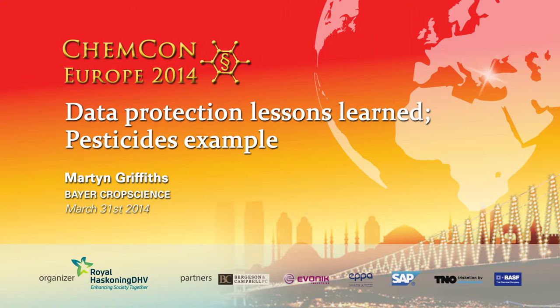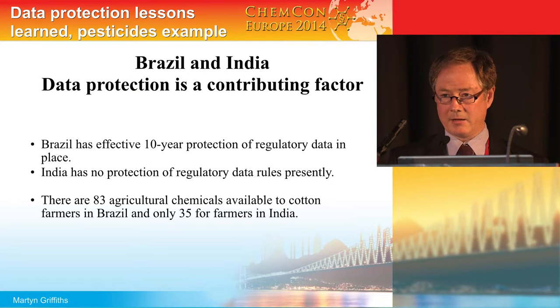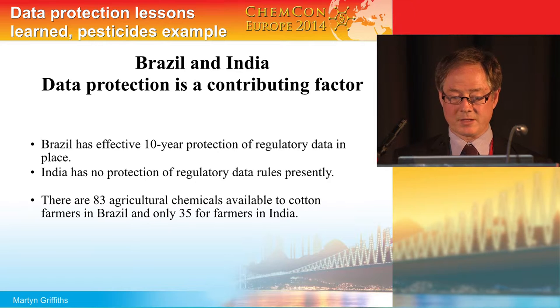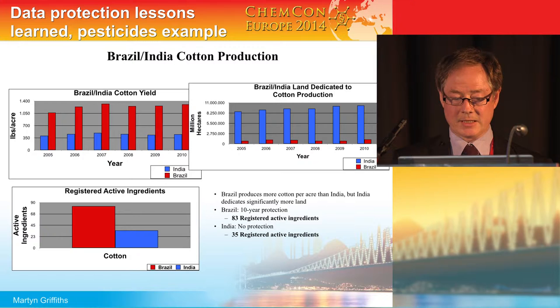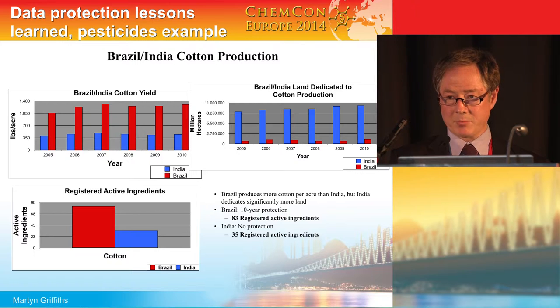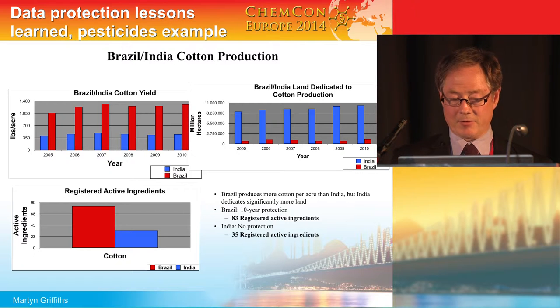Thank you for the opportunity to give a presentation on pesticide examples — two examples from Brazil and India. Data protection is a key factor. Brazil has an effective ten-year data protection in place, just like the US and Europe. India today has no protection of regulatory data. In terms of cotton yields, it can be clearly seen in the red bars for Brazil that the yield is much higher, because there is much more innovation and many more products that can protect against pests.